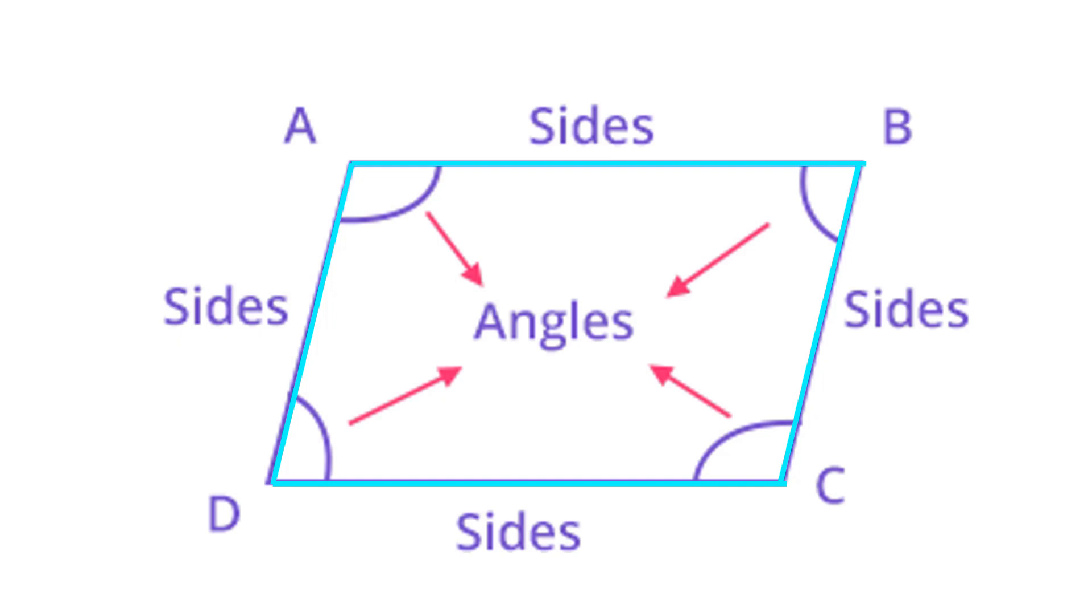We have also four angles: angle A, angle B, angle C, and angle D. These are the four angles of this quadrilateral.